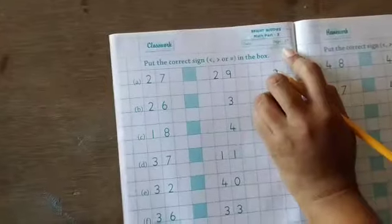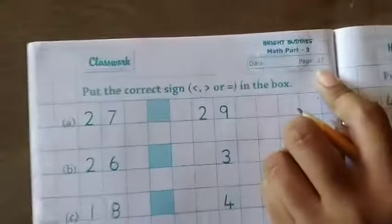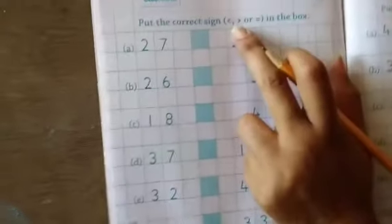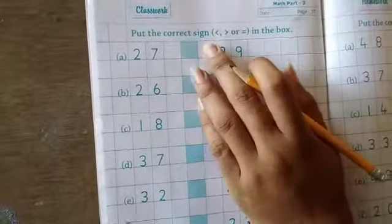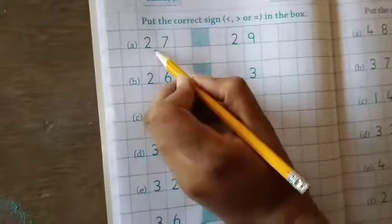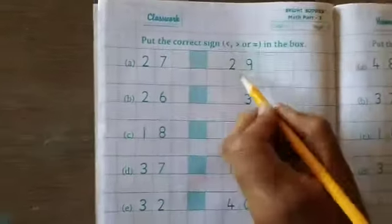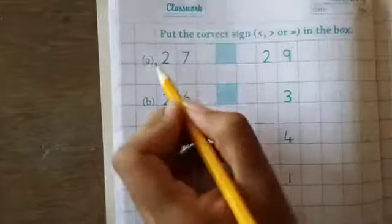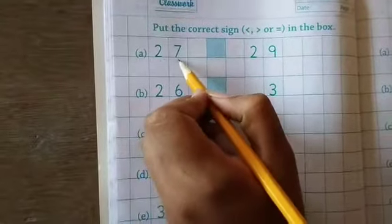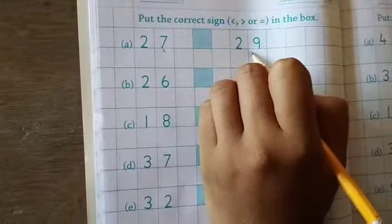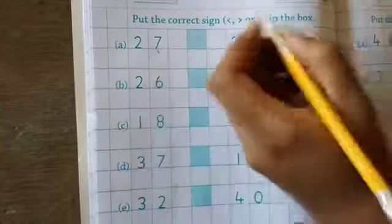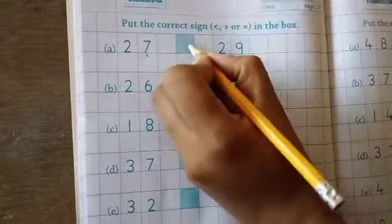Let's see. This is page number 37. See. Less than, greater than or equal to. Put the correct sign in the box. 27, 29. So 27 is small number or big number? Then 29. This is small number. So we use less than.